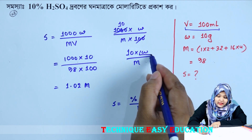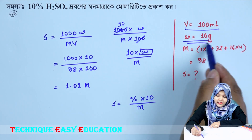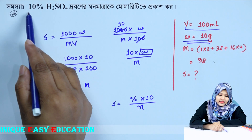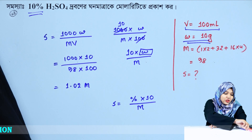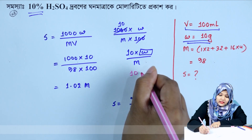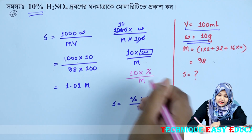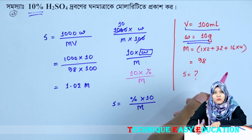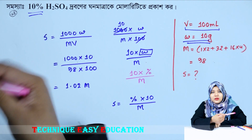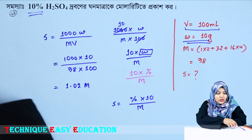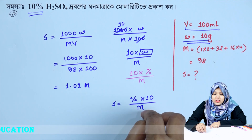Now, the value of W is actually indicated by the percentage — that is, W is expressed by the percentage value. So the formula becomes S equals 10 into percent divided by M. This is the short-cut formula we can use for MCQ problems to quickly find molarity.